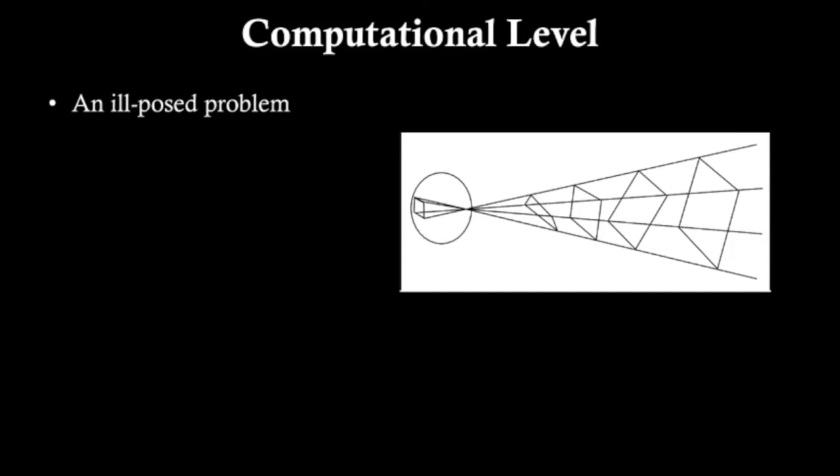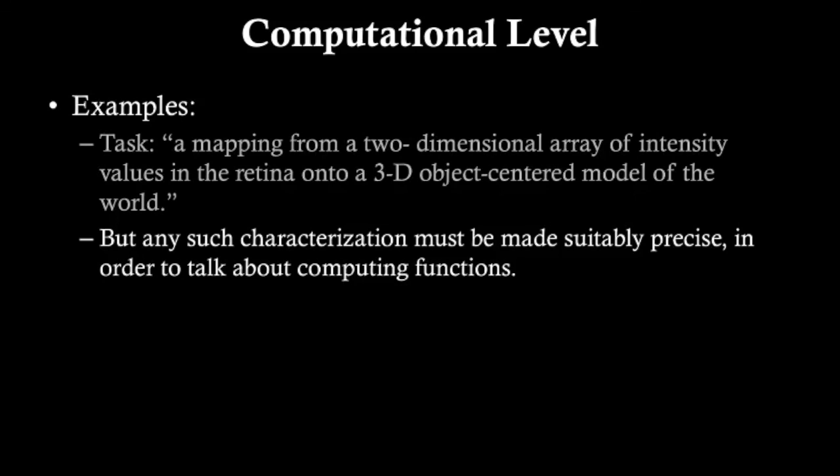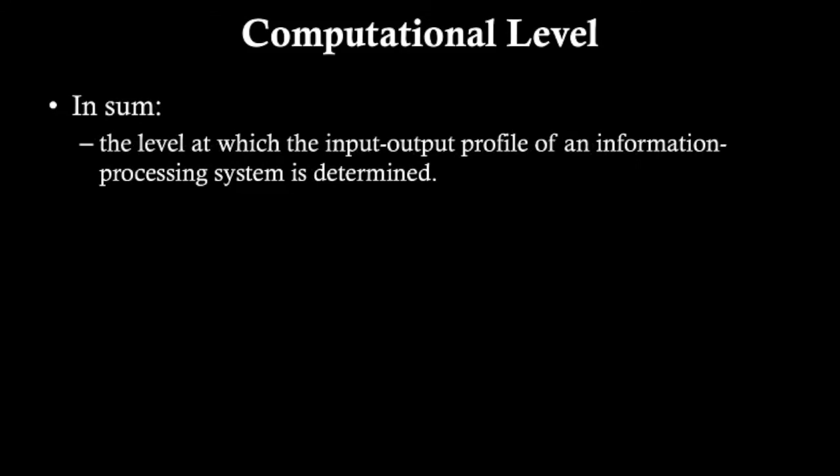Not only do we have the nature of the task, but the characterization must be suitably precise in order to talk about computing functions. The computational level is the level at which the input-output profile of an information processing system is determined and explored. This is the most abstract level. Next, in the next video, we'll talk about the algorithmic level.